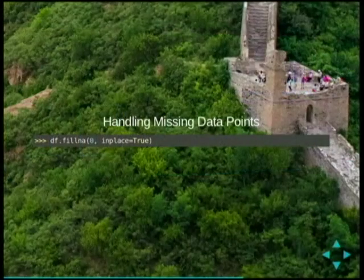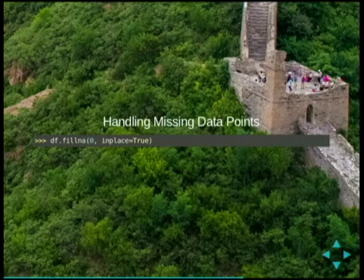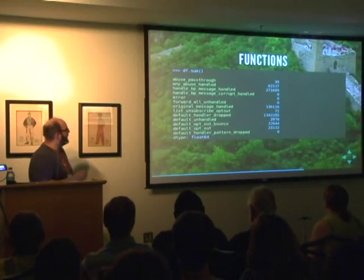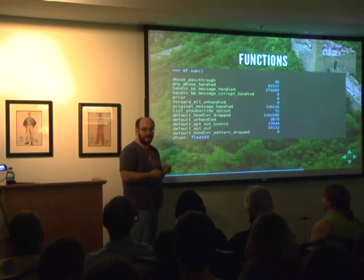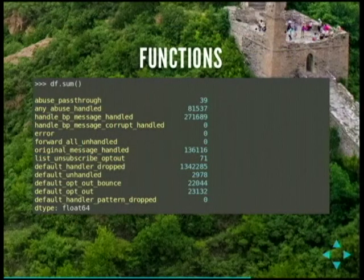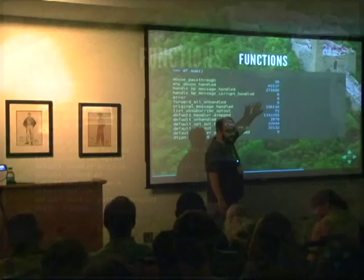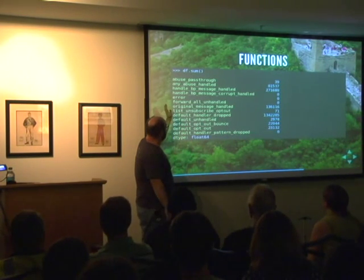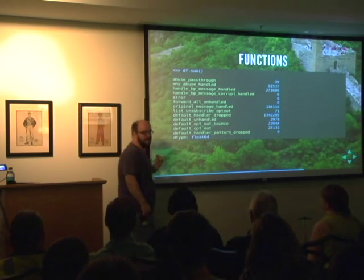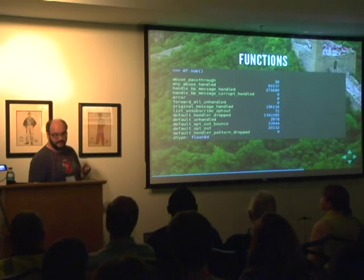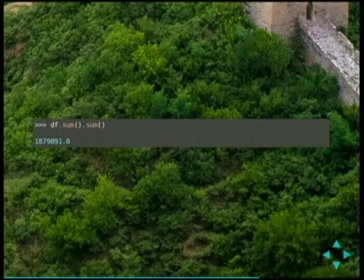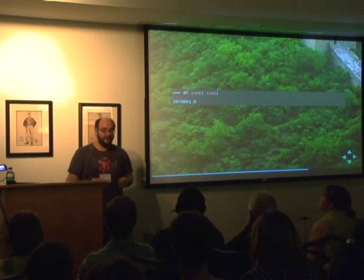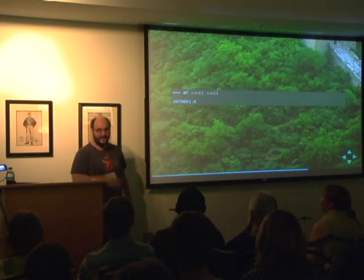For missing data points, just like before, we have fill_na to fill in missing values. I can do sums across entire data frames — this data frame has a datetime index and counters for different abuse types. Broken out by type, irrespective of time, just by calling .sum. I can also do sum of sums to get a grand total. All methods in pandas are built to chain — I can call pivot_table.T.sum.cumsum.whatever.endswith('cookie') and that all happens in order.